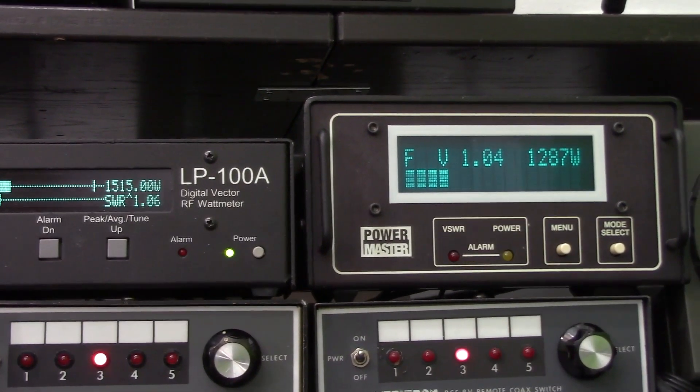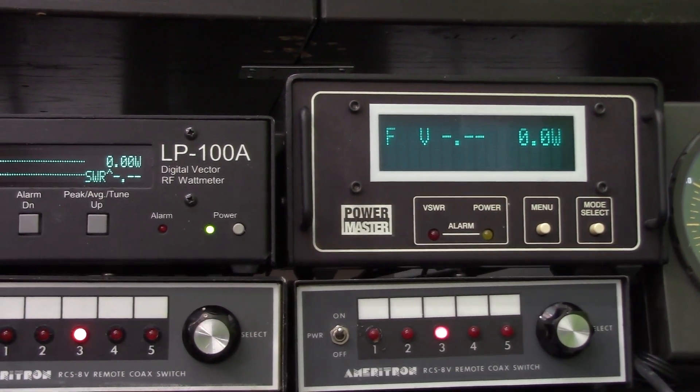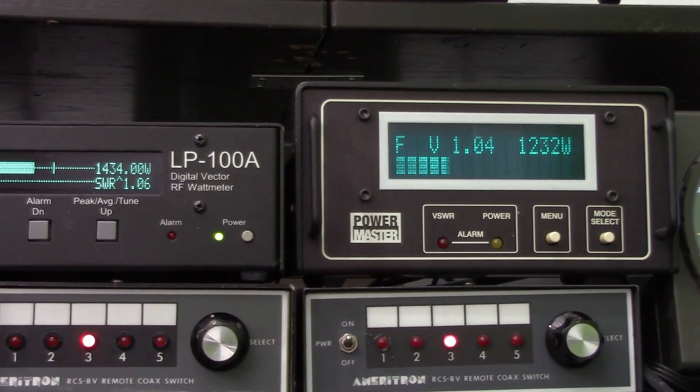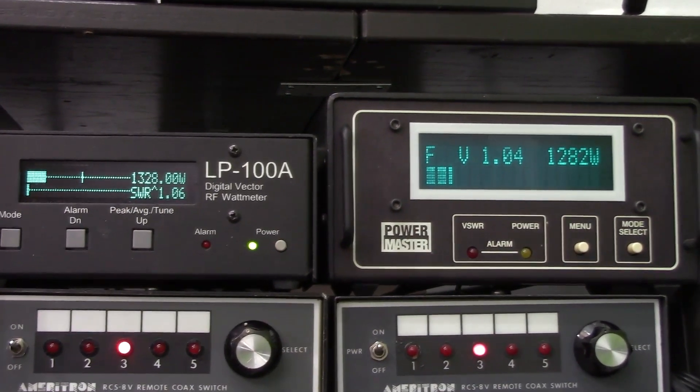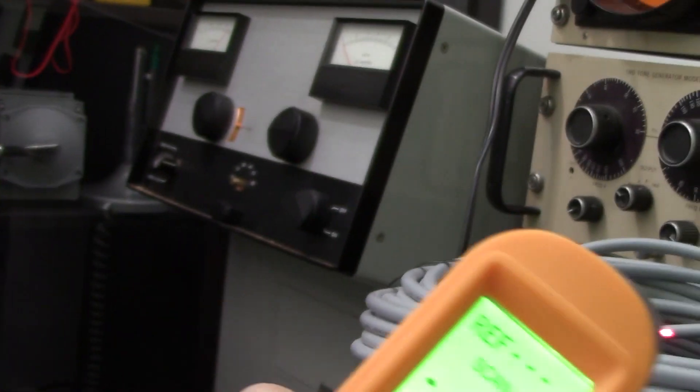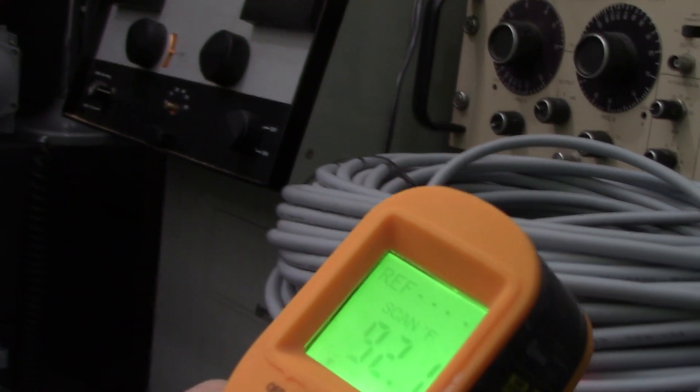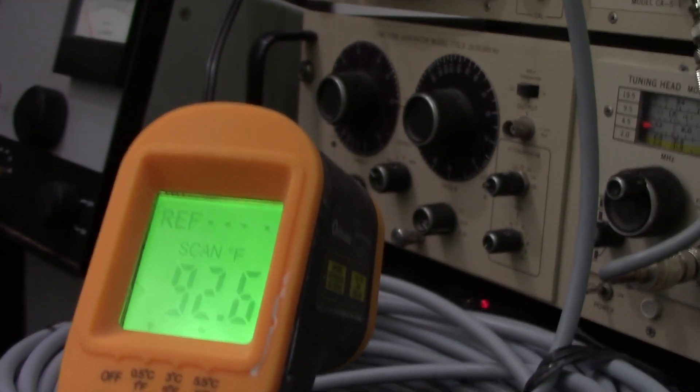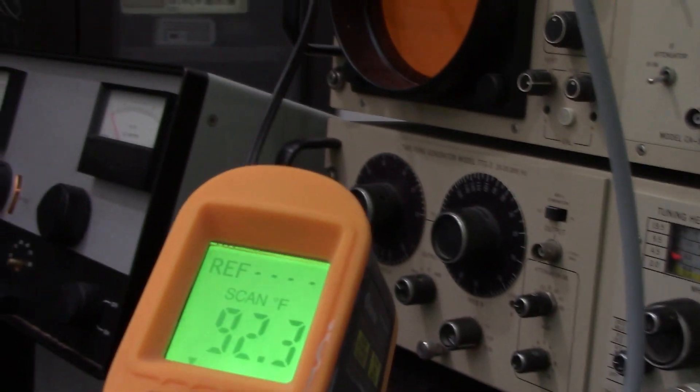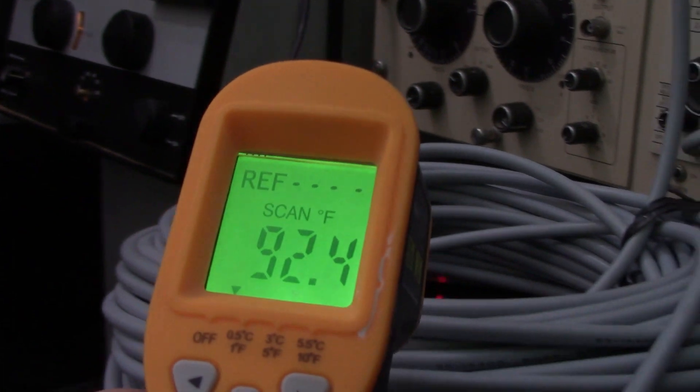One, two, three, four into the dummy. One, two, three, four. One, two, three, four into the dummy. Looking at W6LG. One, two, three, four. All right, let's see what the temperature is on the coax. It's gone up a little maybe. Let's see, get more towards the top. One, two, three, four. Well, all right, 92.